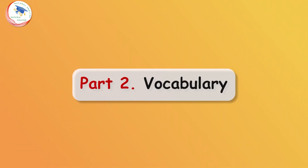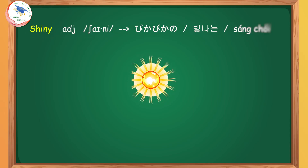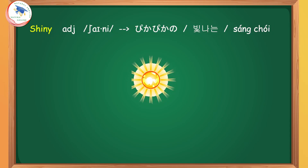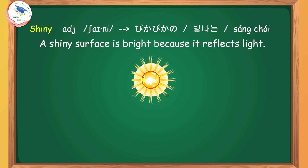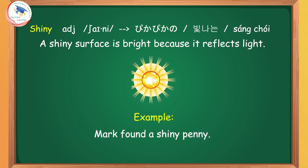Part 2: Vocabulary. Take notes for new words and speak following the video. Shiny: a shiny surface is bright because it reflects light. Example: Mark found a shiny penny. A shiny cover on a book.